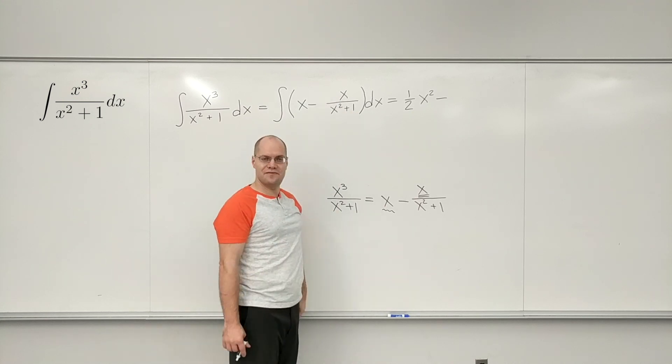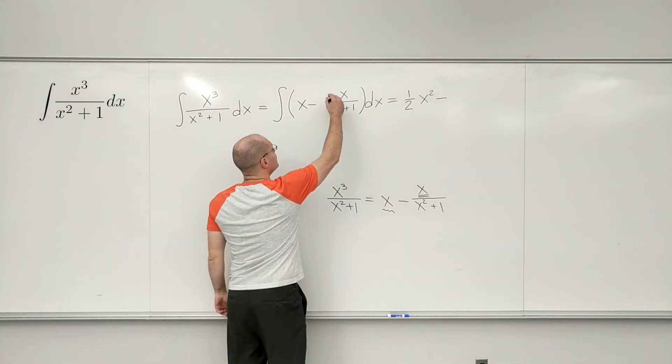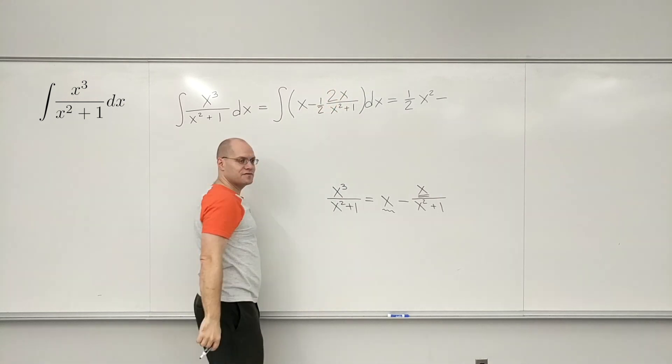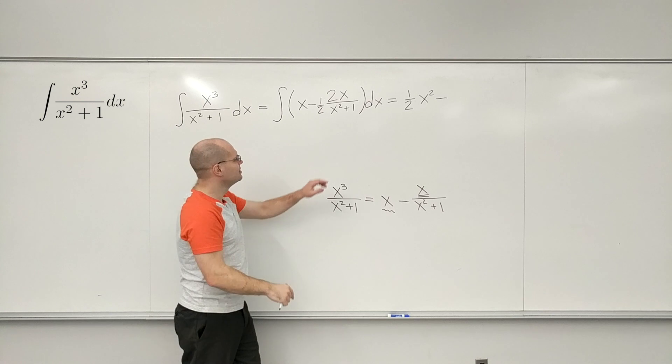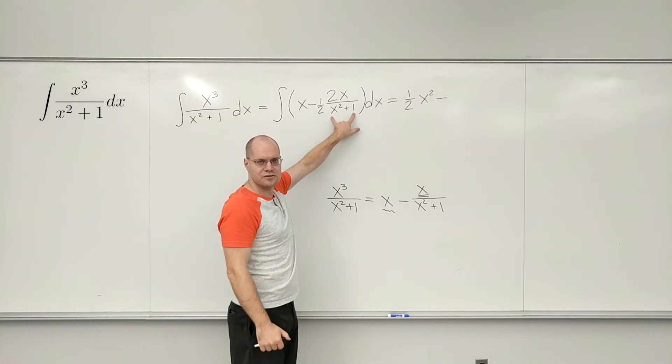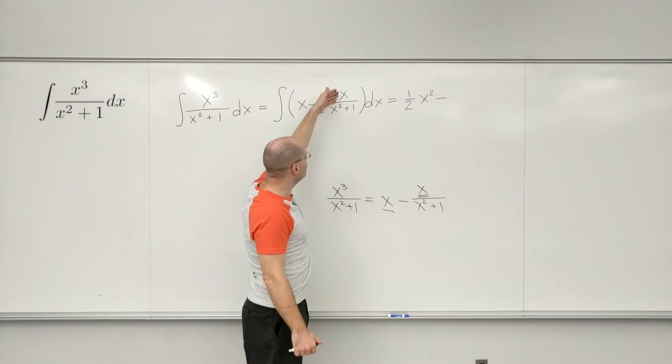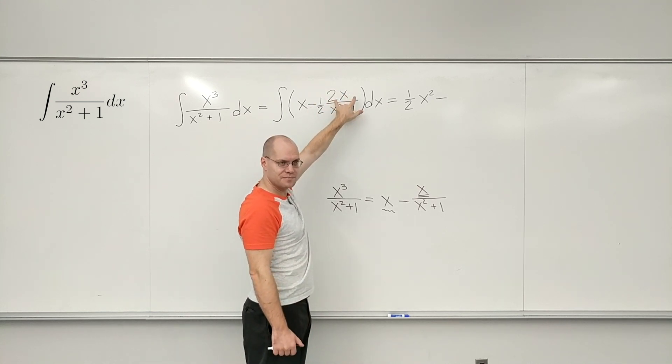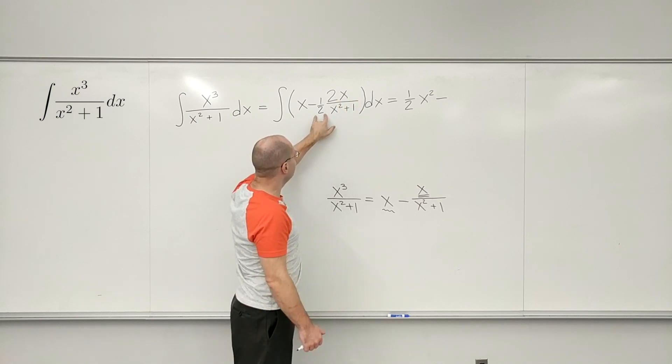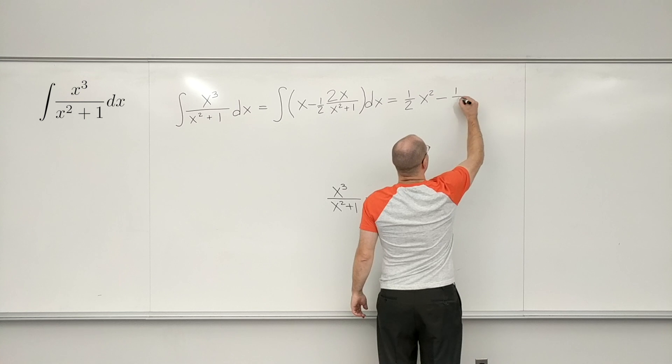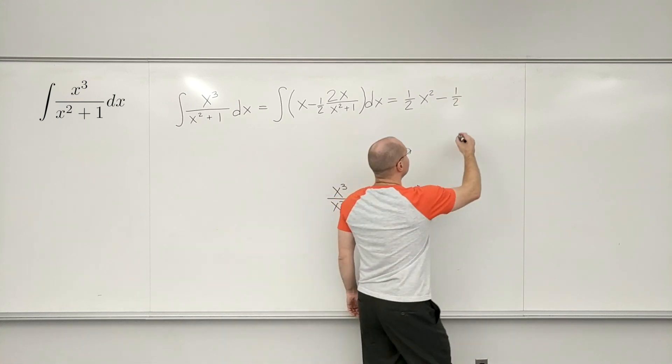The derivative of x squared plus one is 2x. And instead, I only have x, so in my head, I will multiply this by 2 and make up for it with one-half. Just because I want to have, literally, the derivative of x squared plus one. That's how my thought process works. And so now it's strictly one over something times the derivative of something, so that's log. And not forgetting about the coefficient of one-half, we end up with one-half log of x squared plus one.